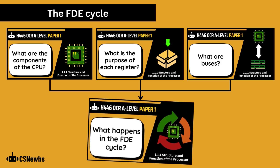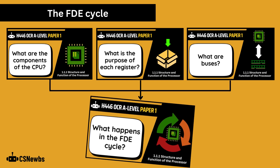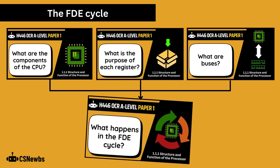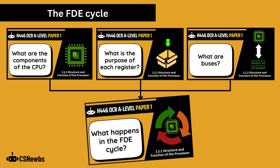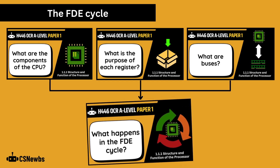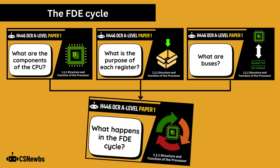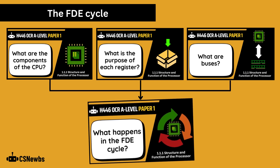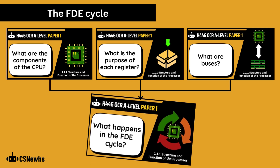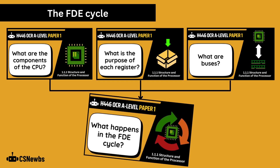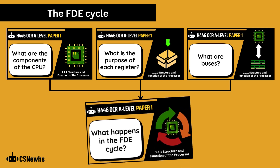If you've been following the videos in order, we have already looked at the components of the central processing unit, each of the 5 registers, and the three buses. Now we're ready to take an in-depth look at what happens in the fetch-decode-execute cycle.